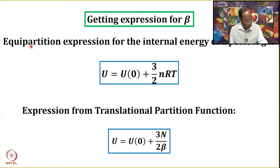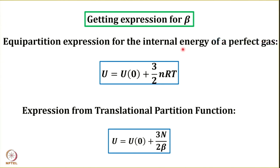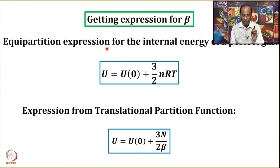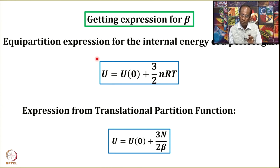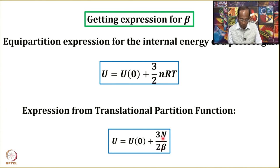Recall the equipartition expression for the internal energy of a perfect gas: it is equal to 3/2 nRT — half nRT in one dimension and 3/2 nRT in three dimensions. We are going to use this result of the equipartition theorem and, using the concepts of statistical thermodynamics, derive that u minus u₀ is equal to 3n over 2β, where n is the number of molecules and β is what we are looking for.